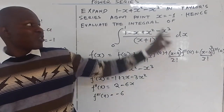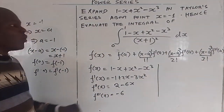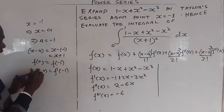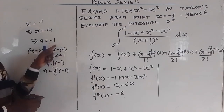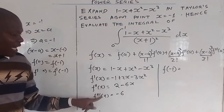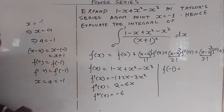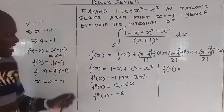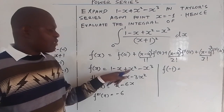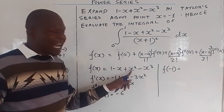We need f of a, f prime of a, f double prime of a, and f triple prime of a. Since a is negative 1, we look for f of negative 1. Where there is x, you put negative 1. So: 1 minus negative 1 is 1 plus 1; negative 1 squared is positive 1; negative 1 cubed is negative 1. So you get 1 plus 1 plus 1 plus 1, which equals 4. f of negative 1 equals 4.